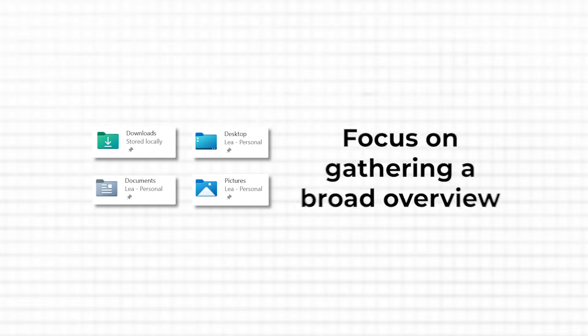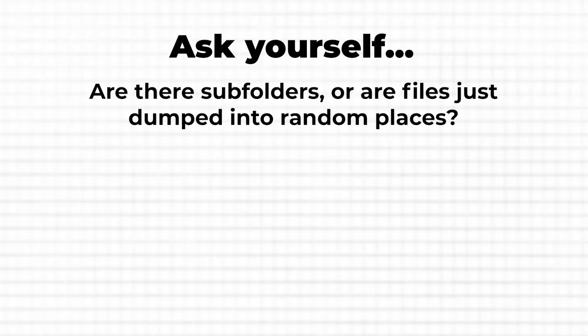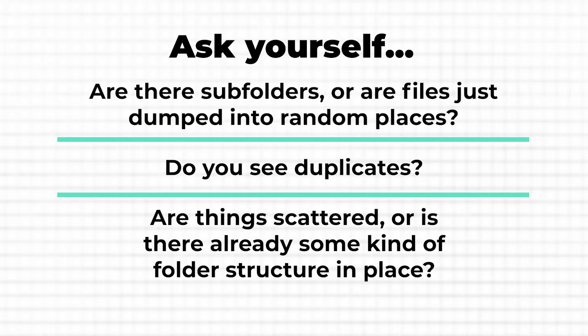Begin by opening each of these areas and taking a look at what's inside. There's no need to open every single file — it isn't about diving into the details. Instead, focus on gathering a broad overview. Pay attention to the types of files you see, such as PDFs, images, and presentations, and how organized or disorganized they appear. Ask yourself: are there subfolders, or are files just dumped into random places? Do you see duplicates? Is there already some kind of folder structure in place? As you go, it might help to jot down a few notes to keep track of what you find.